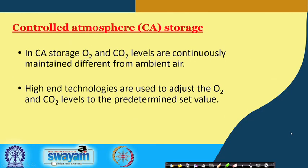In the earlier classes we have seen that the control atmosphere storage includes oxygen and carbon dioxide levels which are continuously maintained different from those normally available in ambient air. By suitable means the O2 and CO2 levels are maintained. Generally, high-end technologies are used to adjust the oxygen and carbon dioxide levels to the predetermined set value — that is, the particular concentration of oxygen or carbon dioxide required for maximum shelf life of a commodity.